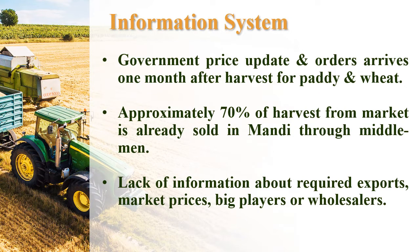Regarding information systems, there is no proper channel between different stakeholders like farmers, middlemen, end buyers, and government officials. For example, in the case of crops like paddy or wheat, prices and demands are set by the government usually after one month of harvesting. Within that one month, middlemen pick approximately 70% of the crops from farmers at a lesser price, while the remaining 30% is sold at the government-regulated price, causing farmers to suffer huge losses.